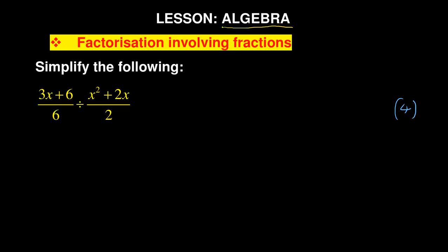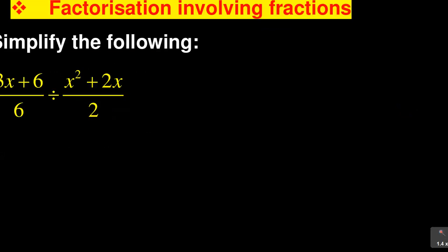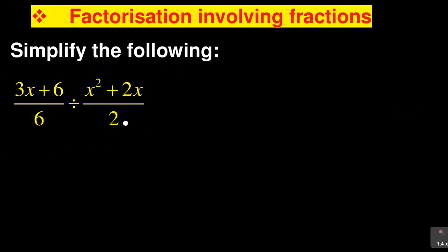Let's look at this question: simplify the following — you have (3x + 6) divided by 6, divided by (x² + 2x) over 2. Now how do you approach this? There is one common error that students usually make, so let me expand it to make it clear.